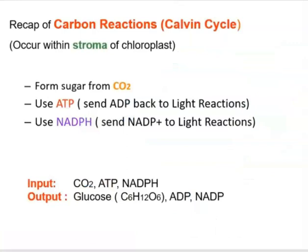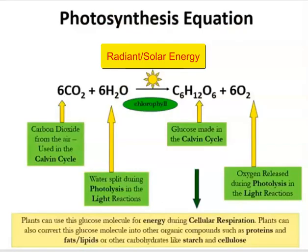To recap carbon reactions: they take place in the stroma of the chloroplast. Sugar is formed by incorporating CO₂ into sugar molecules — the carbon becomes part of the compound. ATP and NADPH generated in the light reactions are utilized here, and ADP and NADP+ are sent back to the light reactions so they can be recycled.